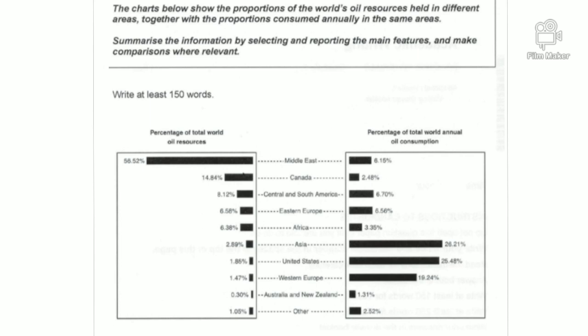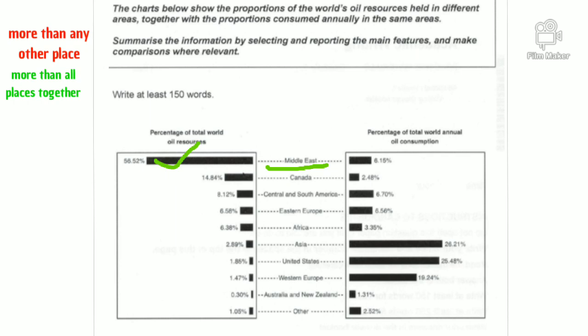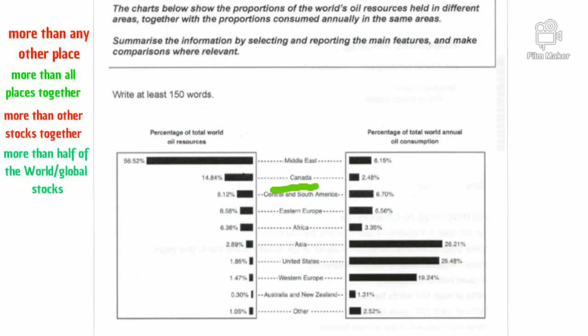The maximum oil deposits are in the Middle East at 56.52 percent, which means more than half of the world's global stocks are in the Middle East. The next region with a significant share is Canada, which is way behind with only approximately 15.84 percent.